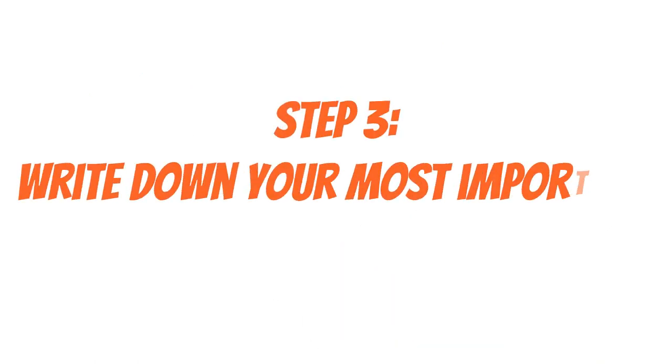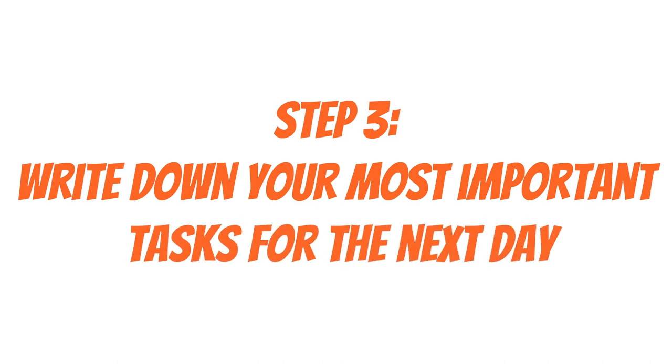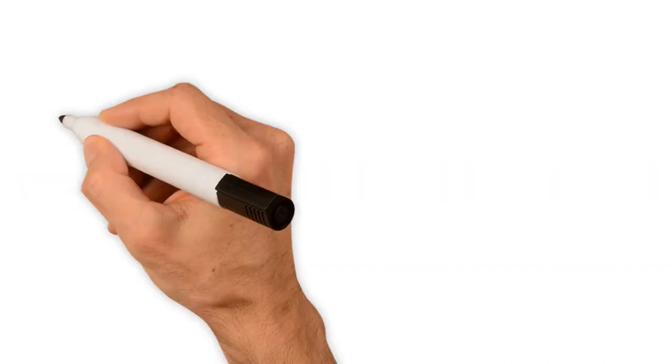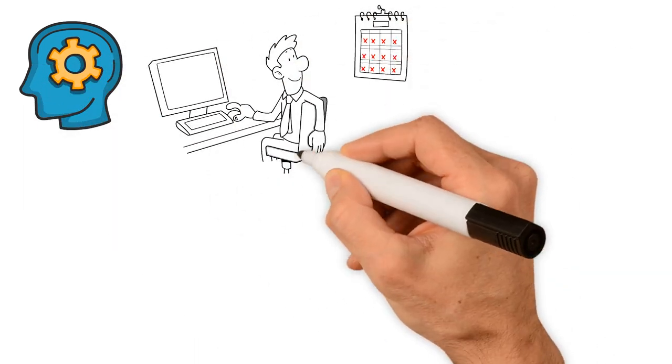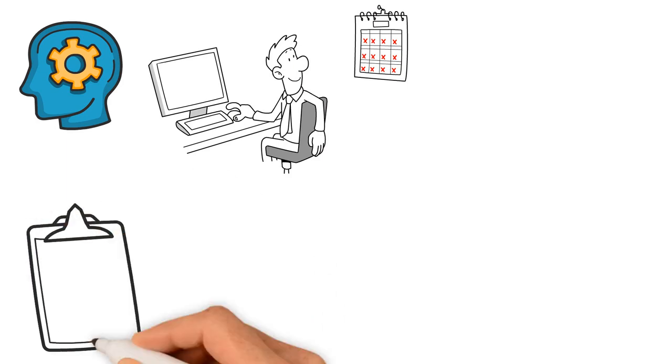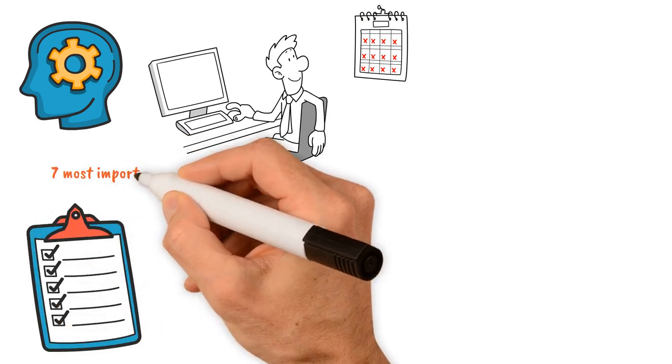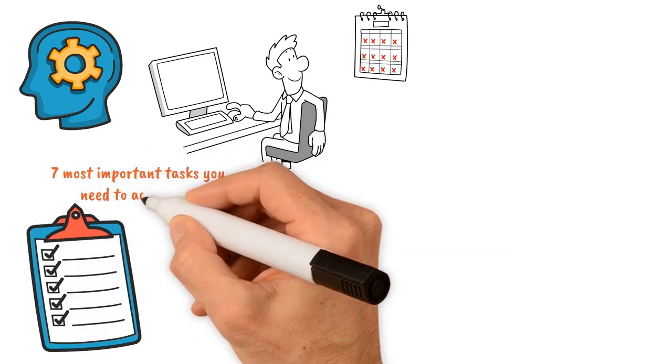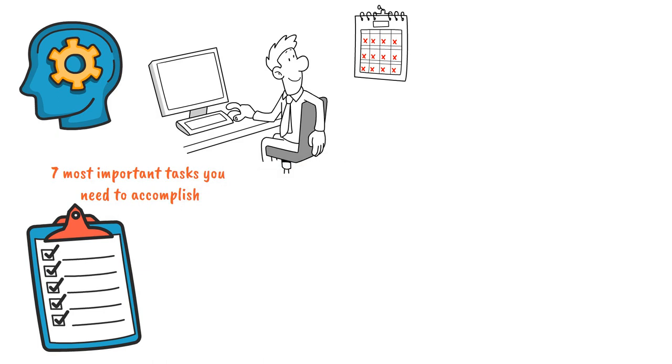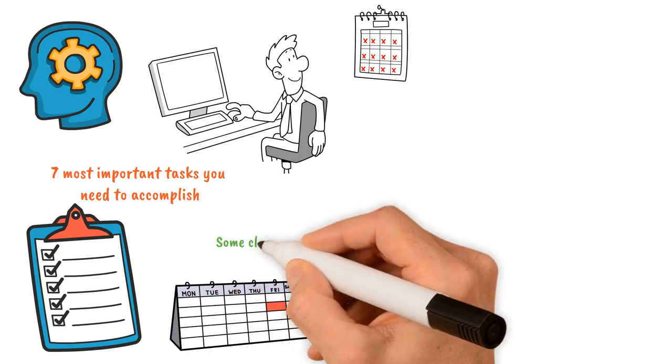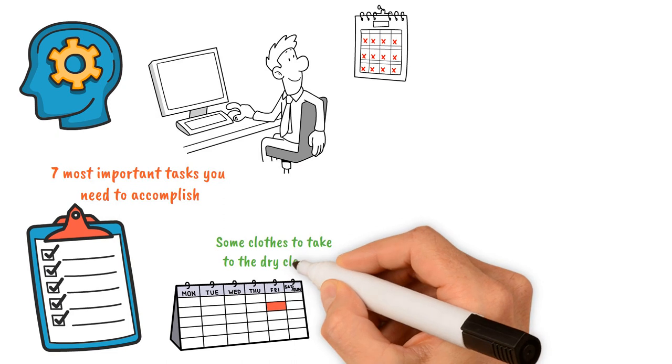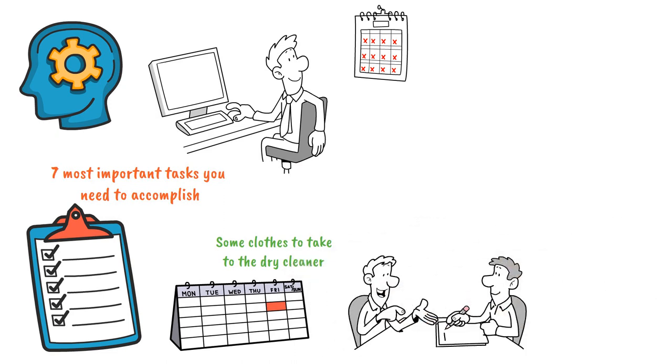Step 3: Write down your most important tasks for the next day. To ensure you have a productive day ahead, it's essential to plan ahead for the next day. One effective strategy is to create a to-do list consisting of the seven most important tasks you need to accomplish. Let's say you have a presentation due at the end of the week, some clothes to take to the dry cleaner, and important matters to discuss with your accountant.